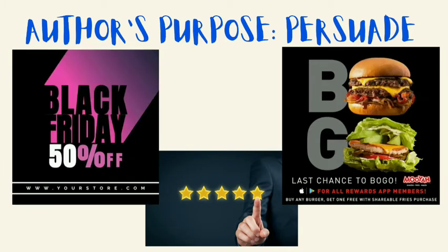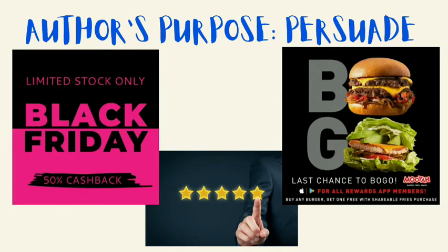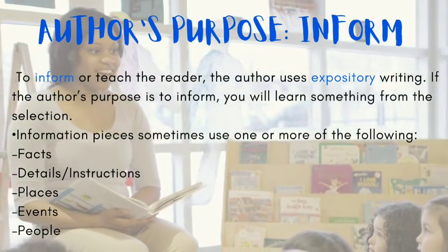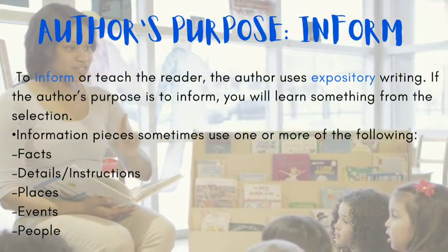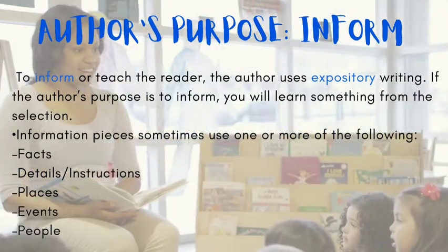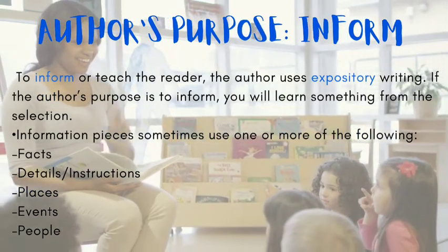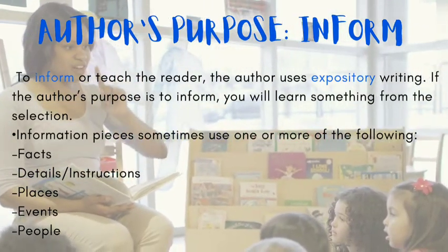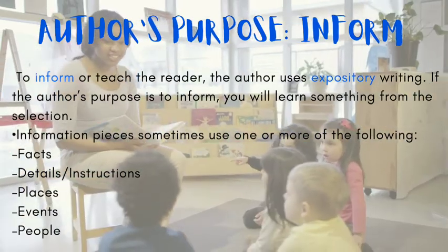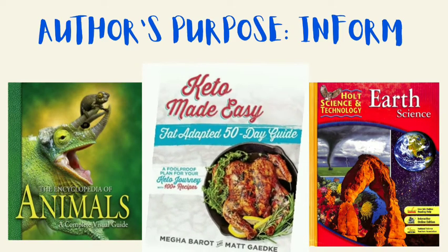The next purpose for writing is to inform. To inform or teach the reader, the author uses expository writing. If the author's purpose is to inform, you will learn something from the selection. Information pieces sometimes use one or more of the following: facts, details or instructions, places, events, or people. One of the best ways to know if the author's purpose is to inform is to look for factual information.